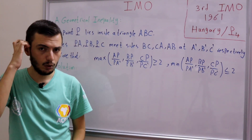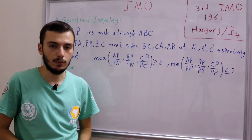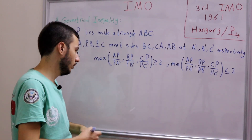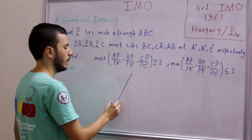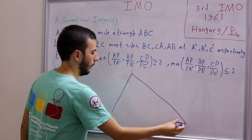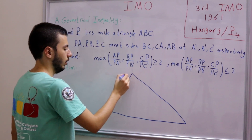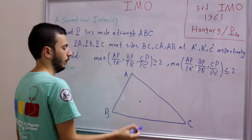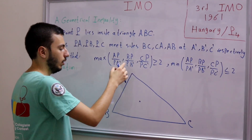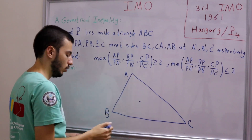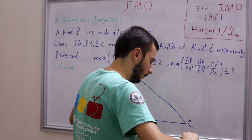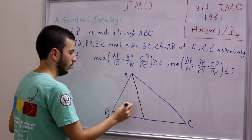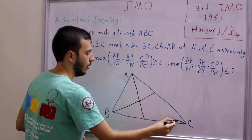Since it's a geometry problem, it makes sense to draw a diagram first. We draw triangle ABC and place point P inside it. Then we draw lines AP, BP, and CP extended to meet the opposite sides, labeling the intersection points A', B', and C' respectively.